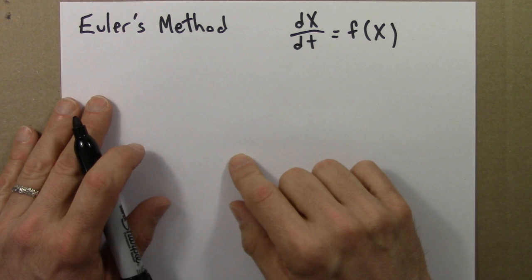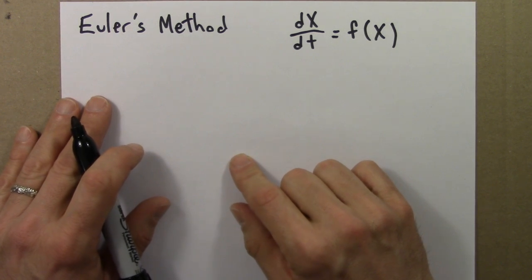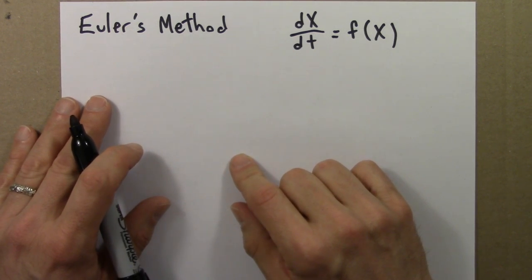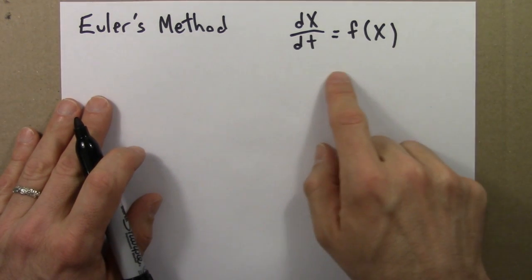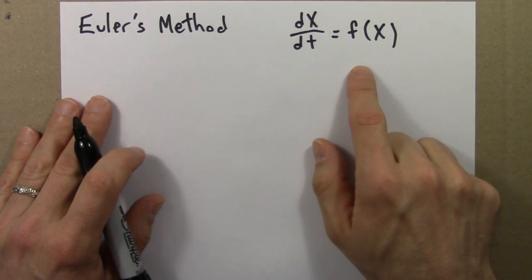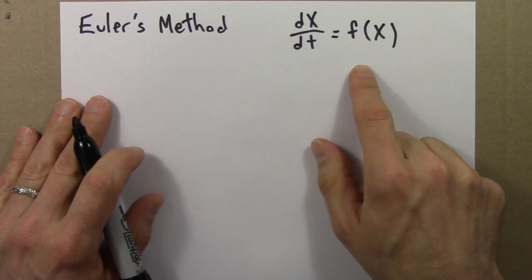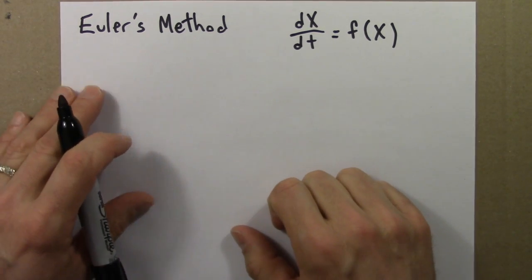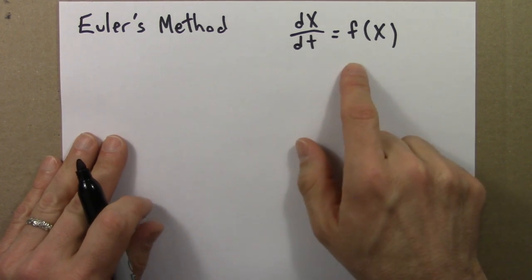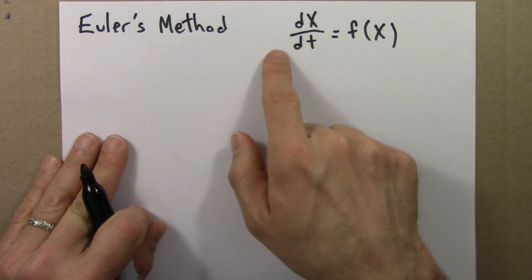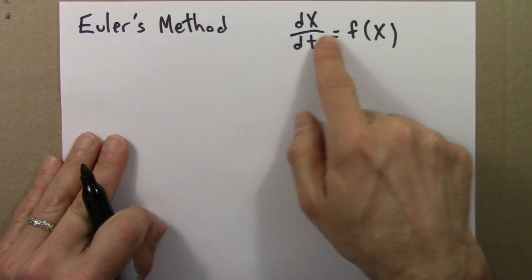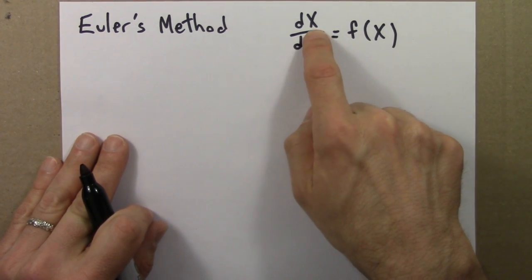Now that we've seen part of a particular example, let me talk about Euler's method a bit more generally. Euler's method applies to differential equations of this form: dX/dt = f(X). A differential equation is a dynamical system, a rule for how something changes in time. What makes differential equations a little bit tricky is that the rule is indirect. This tells us how the derivative changes, and we're interested in how the quantity x itself changes.